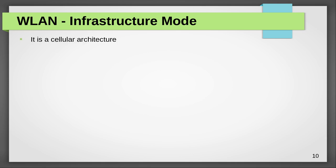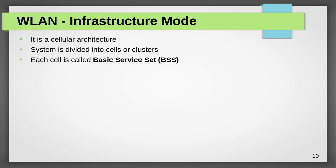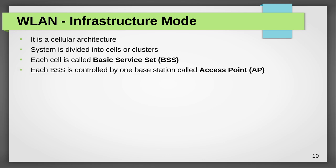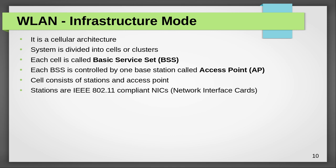The infrastructure mode uses a cellular architecture where devices are divided into different cells called a basic service set. Each cell is controlled by a base station called the access point, which is a wireless router. The cells consist of stations and an access point — a station means a wireless host, specifically an IEEE 802.11 combined network interface card through which you connect to the network.